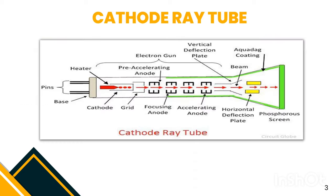Have a look at this cathode ray tube diagram. You can observe various parts of the cathode ray tube.